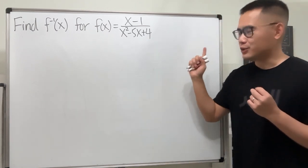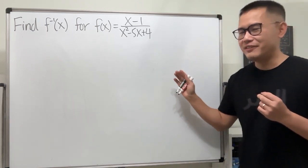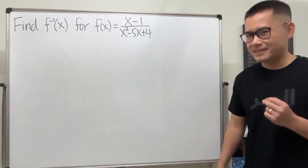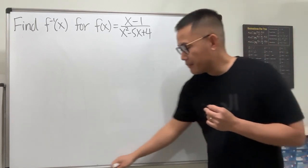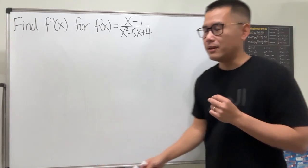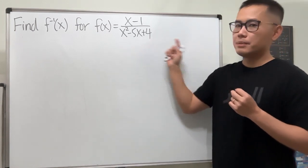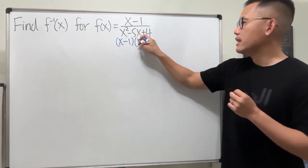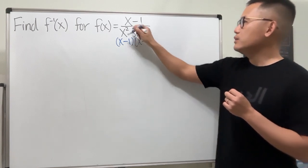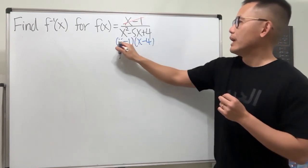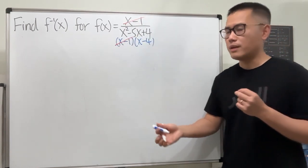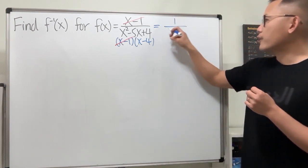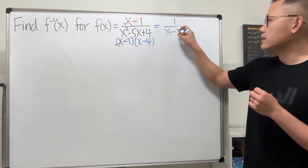You should pause the video and try this first to see if you can get the technical part done. Let's take a look. Many of you noticed that the bottom can be factored — we get (x minus 1)(x minus 4). We can cancel the (x minus 1), so we just have 1 over (x minus 4).